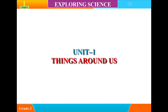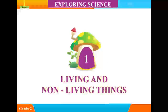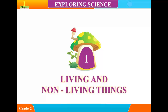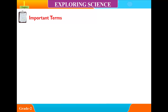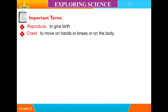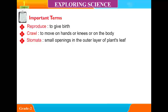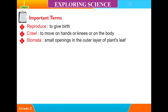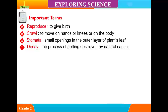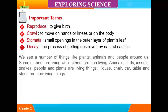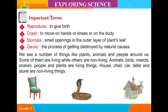Unit 1: Things Around Us. Chapter 1: Living and Non-Living Things. Important Terms — Reproduce: to give birth. Crawl: to move on hands or knees or on the body. Stomata: small openings in the outer layer of plant's leaves. Decay: the process of getting destroyed by natural causes.